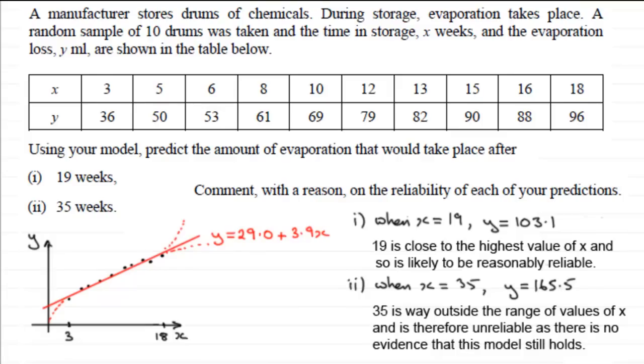So in answer to that I would say that 35 is way outside the range of values of x and is therefore unreliable as there is no evidence that this model still holds.